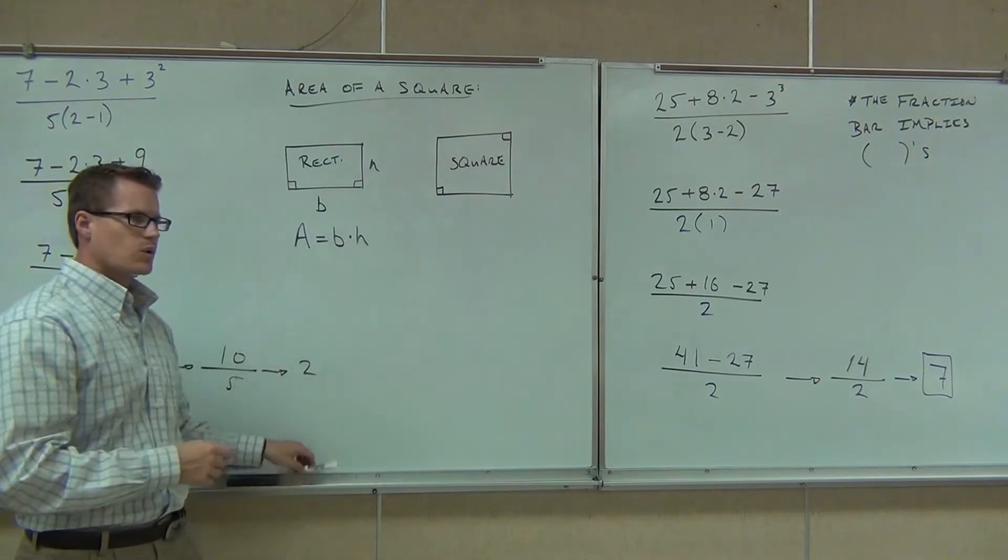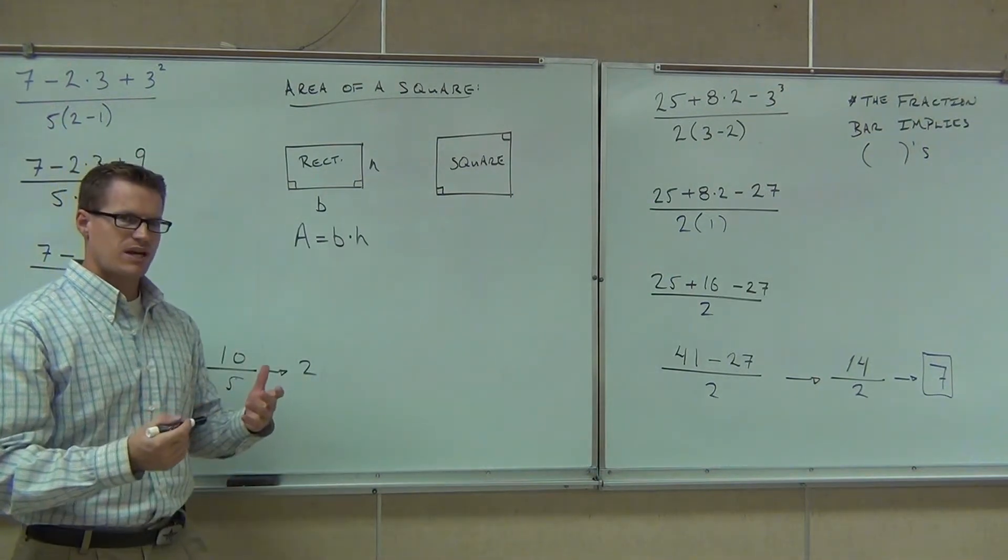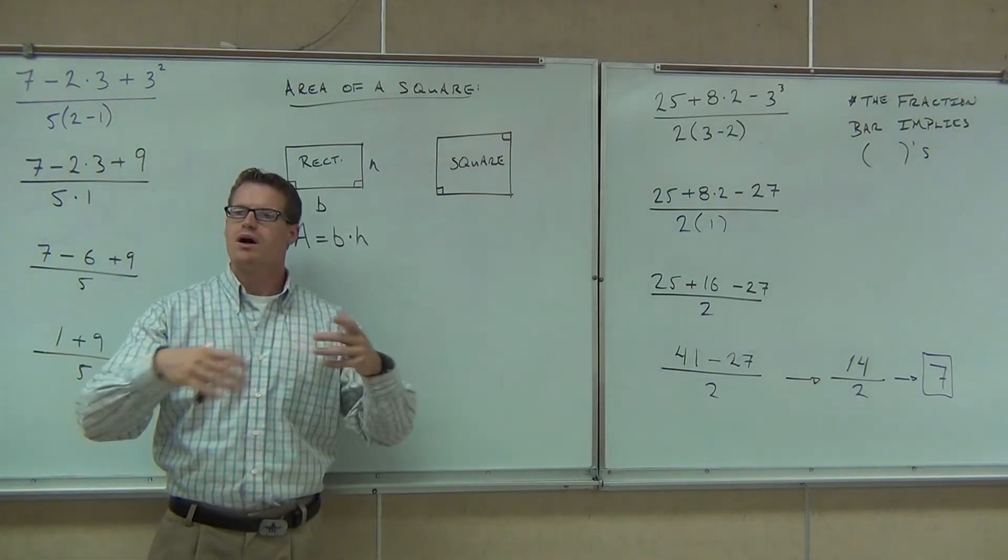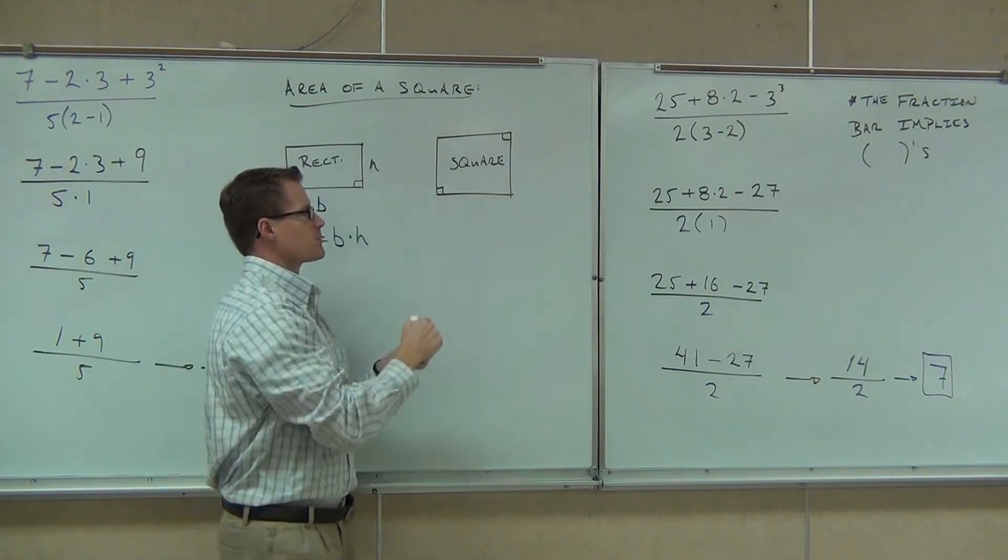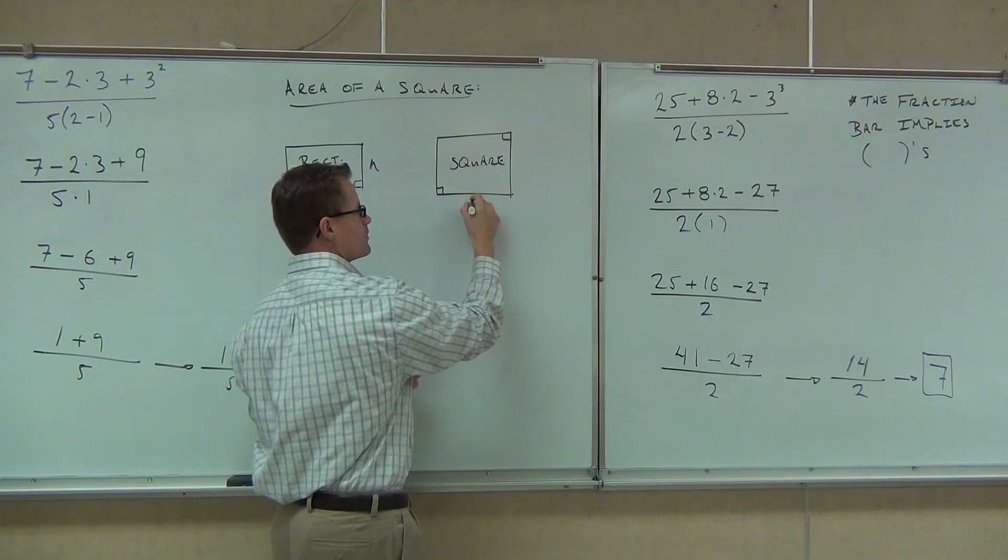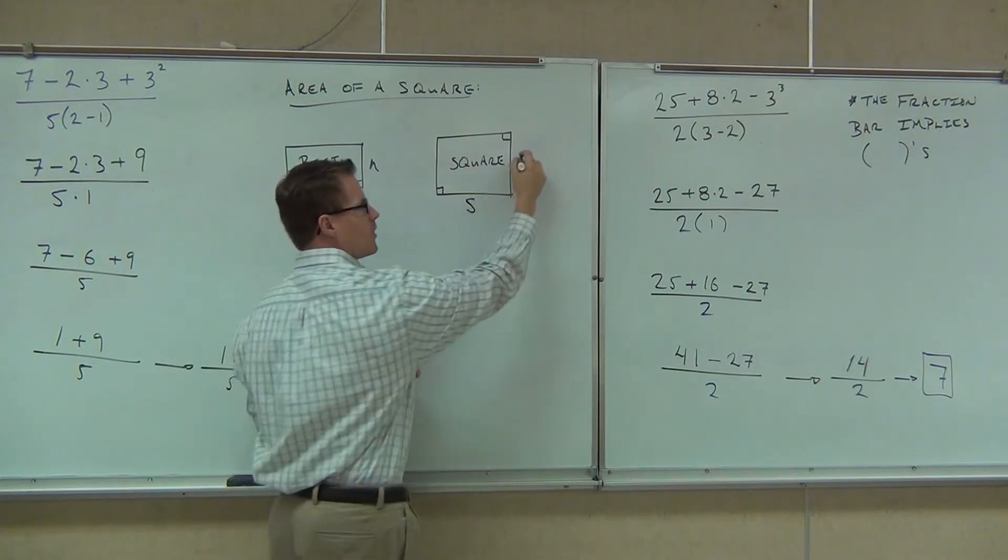That means the area of a square is going to be the same thing. We could say base times height, but watch the board here. When a rectangle is a square like this, we all know something about the sides. They're all the same.